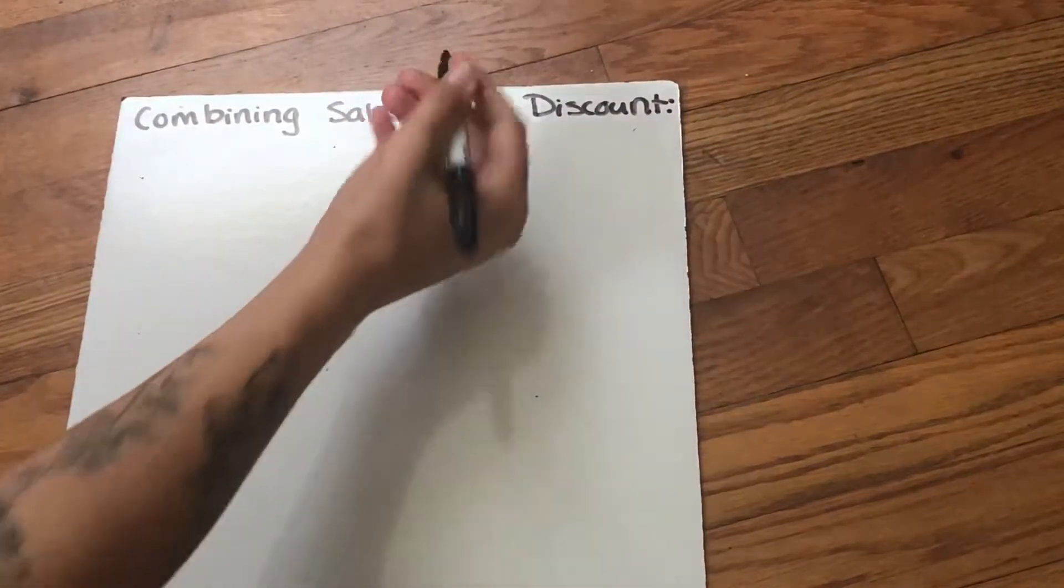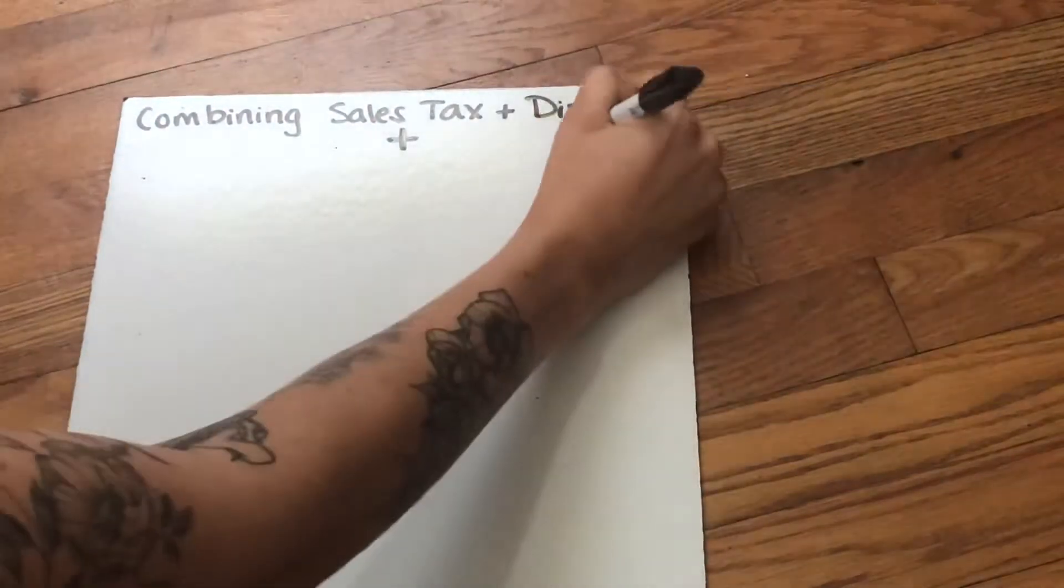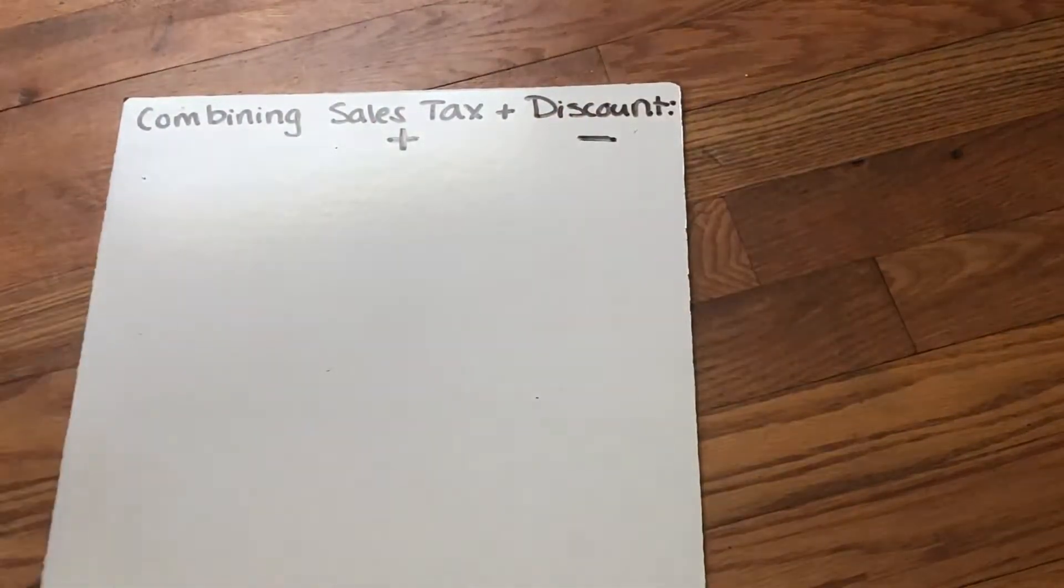So we're combining sales tax and discount. Remember, sales tax is a price that is added to the items you're buying and discount is something that is subtracted.